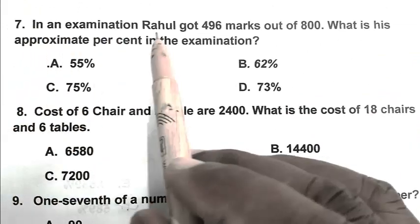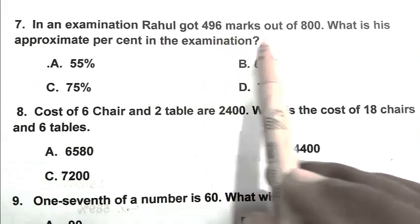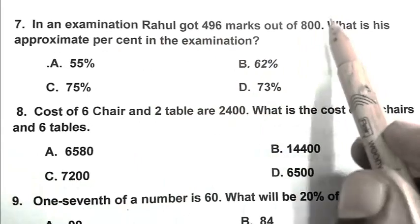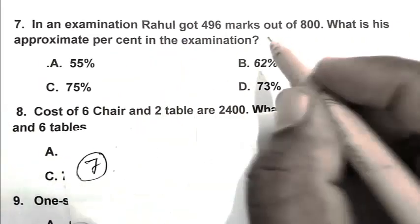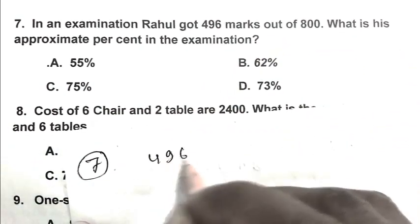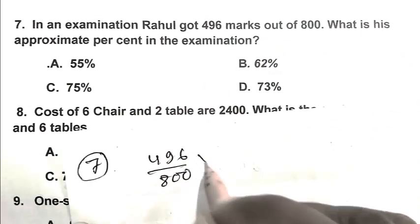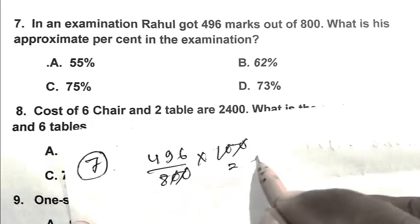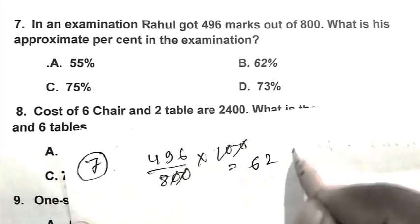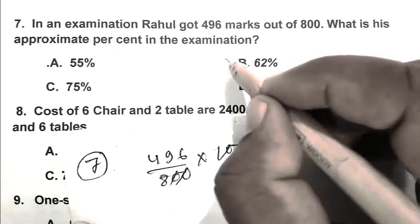Question number 7: In an examination Rahul got 496 marks out of 800. What is his approximate percent? Percentage is 496 upon 800 multiplied by 100, which equals 62 percent. B is the right answer.